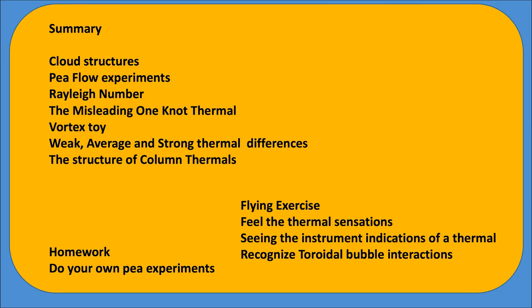Summary then. We had a look at very simple cloud structures, although we'll look at more later. We've seen the P-flow experiments, the importance of Rayleigh number, the misleading 1-knot thermal — it doesn't exist. We'll have a look at the vortex toy through the video, weak, average and strong thermal differences, and the structure of column thermals.